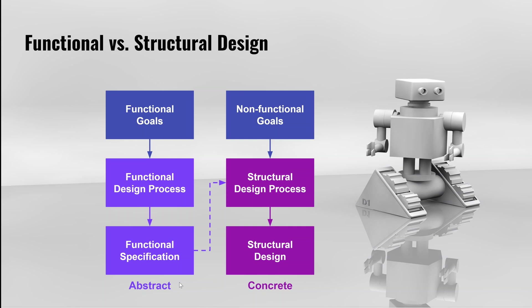How we implement the functionality does not get specified until the structural design, which is then concrete. In practice, however, a small part of the functional design will probably leak into the structural design, particularly around interfaces to the software such as user interfaces or APIs. The functional specification might specify how these interfaces have to be implemented, or at least how they have to look at the surface level.